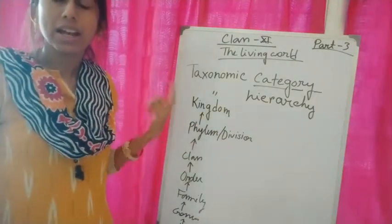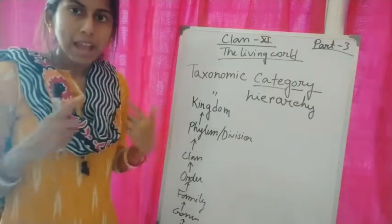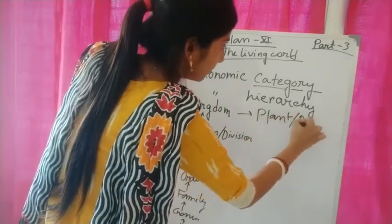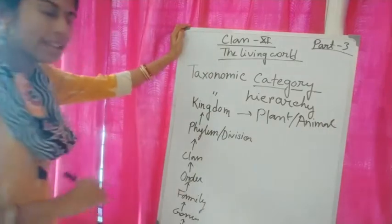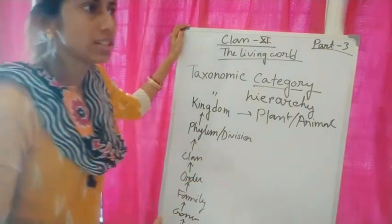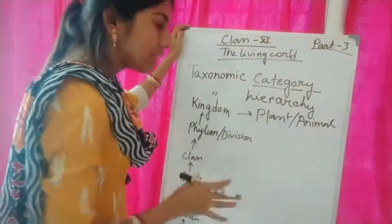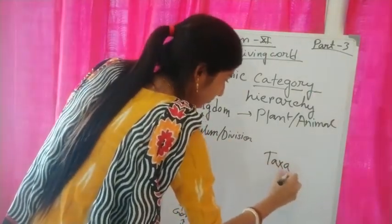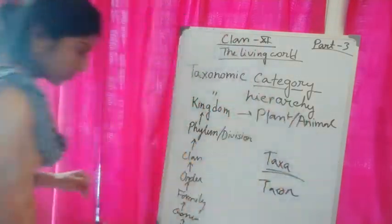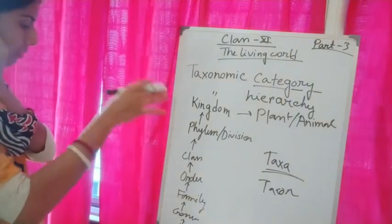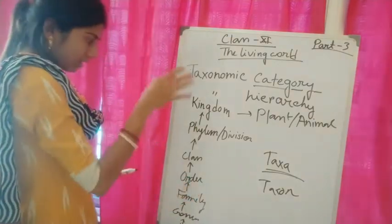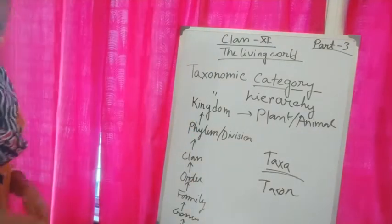Kingdom is a category, phylum is a category, class is a category. Under the kingdom we will find plant kingdom and animal kingdom. Under kingdom we will find different phyla — such as porifera, cnidaria, platyhelminthes. These are called taxa (singular: taxon).